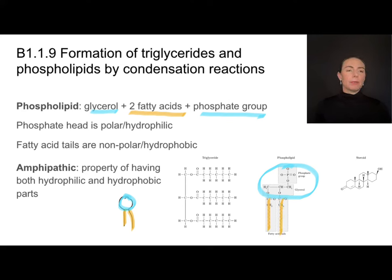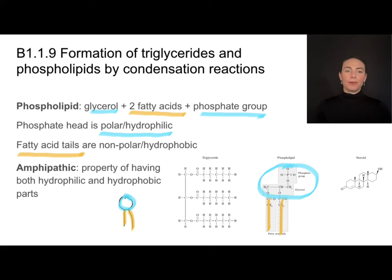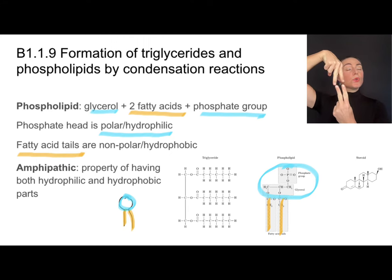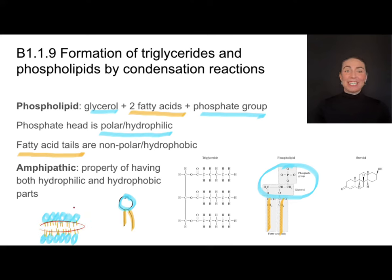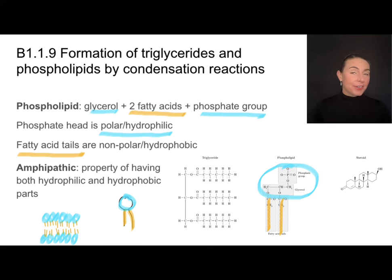This is very important: the phosphate head is polar, which means it's hydrophilic — it loves water. The fatty acid tails are non-polar and hydrophobic. This is one of the reasons why phospholipids spontaneously form a bilayer, with the tails of two phospholipids pointing inward toward each other because they're hydrophobic, while the hydrophilic heads face outward in contact with a watery solution. This is a clear example of form and function with these amphipathic phospholipids.